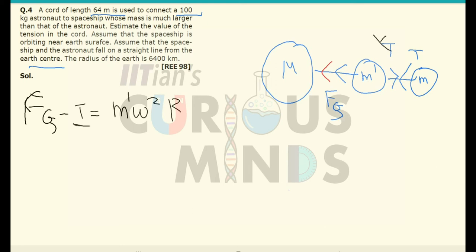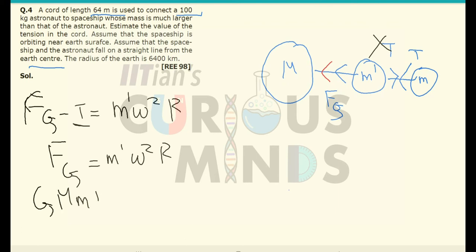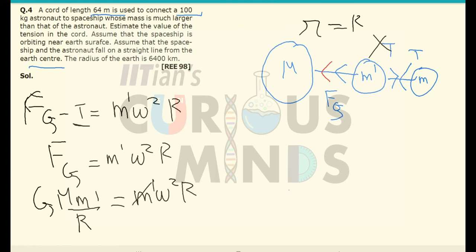The tension due to the astronaut on the satellite is almost negligible, so the gravitational force equals m'·ω²·r. The gravitational force is given by G·M·m'/R², where we use capital R because the satellite orbits very close to Earth, making the orbital radius approximately equal to Earth's radius. After cancelling m', we get ω² = GM/R³. Let this be equation one.